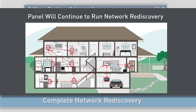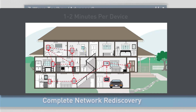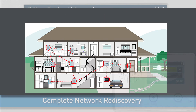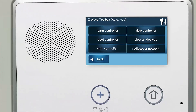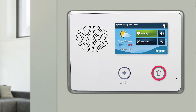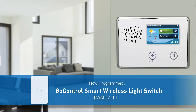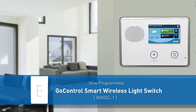Note, the panel will continue to run the network rediscovery process in the background. Network rediscovery will take around 1 to 2 minutes per Z-Wave device. Z-Wave services may be unavailable until network rediscovery is complete. Press the Home button on the panel. The GoControl Smart Wireless Light Switch has now been programmed into a GC2 panel.